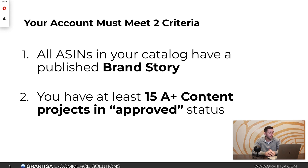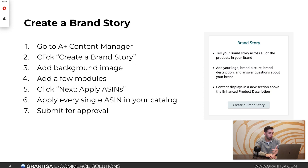That's number one. And number two, you have to have at least 15 A-plus content projects in approved status. So let's talk about number one — how do you create a brand story? You're going to go to your A-plus content manager and click Create A-plus Content. You'll see this option: Create a Brand Story. Click that button.